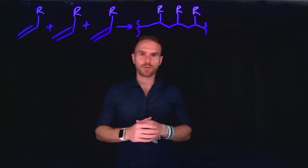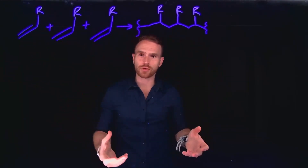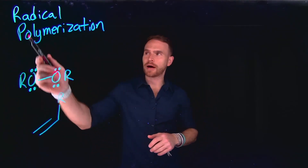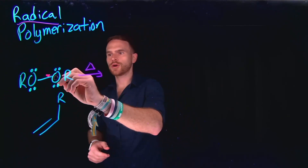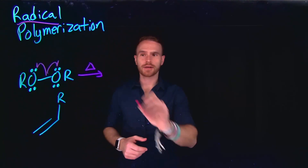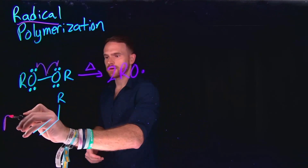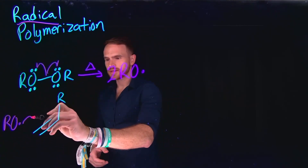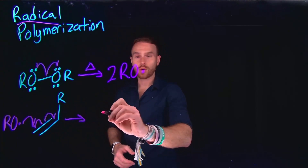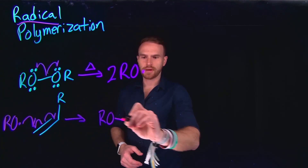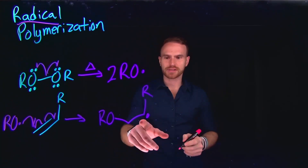In a previous video, we learned all about polymerization in organic chemistry, where individual monomers can combine to form long chains of repeating units, which we call polymers. The first type of polymerization reaction we're going to talk about is radical polymerization. The first step in this mechanism is called initiation, where you can add heat to a peroxide to generate two brand new radical species, which can then react with our starting material monomer. Once we've generated this radical species, it can react with the starting material monomer to form a brand new radical carbon.